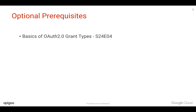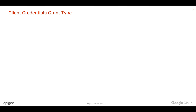Prerequisites for this video: basics of OAuth 2.0 grant types — for that you can refer to the earlier 4-minute video. Let's understand how different stakeholders work together in the client credentials grant type and how a machine is able to access the API.